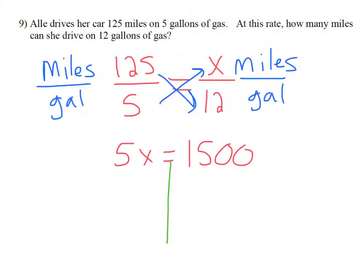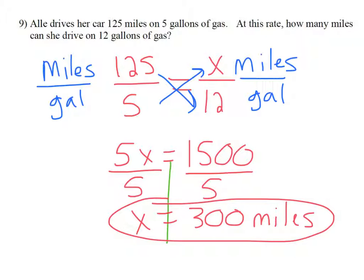How do I undo 5 times x? I divide both sides by 5. Take 1,500 divided by 5, and my answer is 300. So Allie can drive 300 miles on 12 gallons of gas.